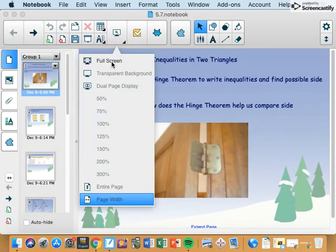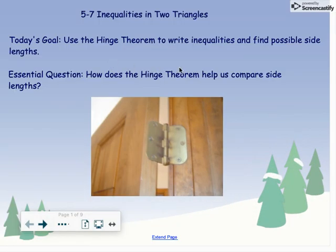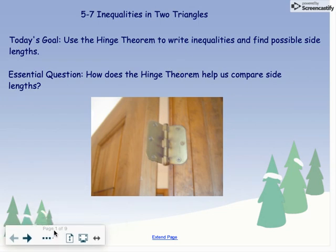Hello class, and welcome to today's lesson on 5-7. We're going to talk about inequalities in two triangles. Today's goal is to use the hinge theorem to write inequalities and find possible side lengths. Our central question is: how does the hinge theorem help us compare sides? Like all the videos, if you need to pause it, please feel free to do that.